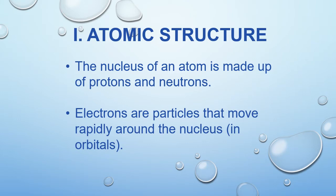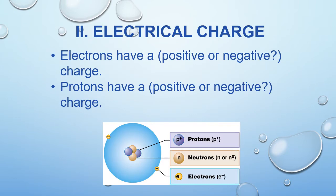We have protons, neutrons, and electrons. The protons and neutrons are in the center, and the electrons are kind of floating around outside in an outer shell. When we look at these structures, we can see that protons are positive and electrons are negative. Neutrons, as the name implies, have no charge to them, so they don't affect the overall charge of our atoms.